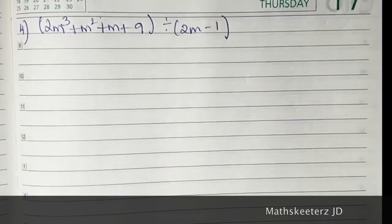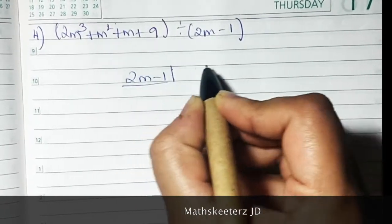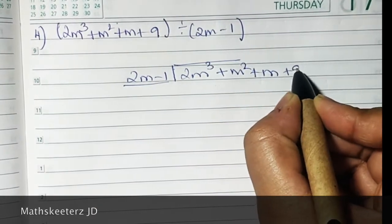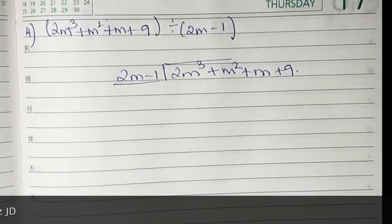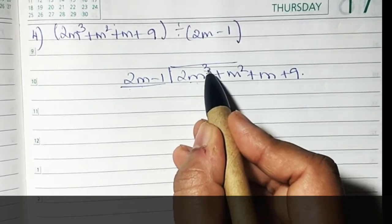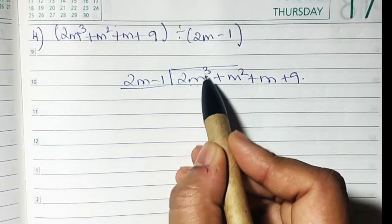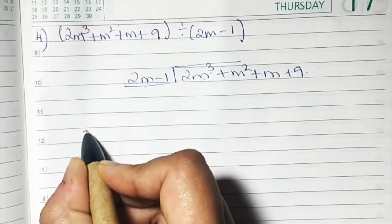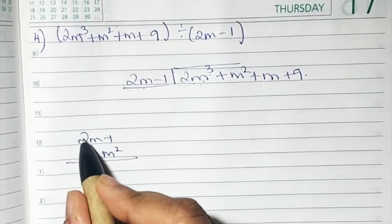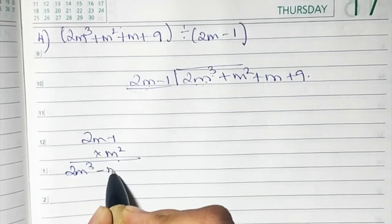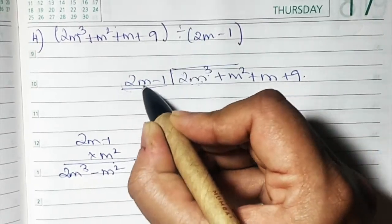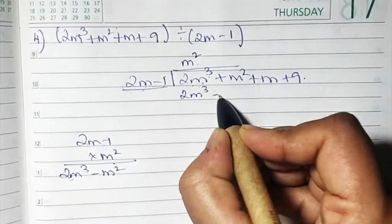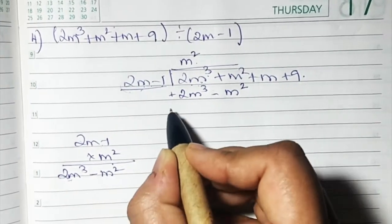Now sum number 4. We write it in the division pattern: 2m - 1 outside, and 2m³ + m² + m + 9 inside. The first term is 2m and we have 2m³, so 2 m's are missing — from 1m to 3m. We multiply 2m - 1 by m² to get the first term: 2m × m² = 2m³, and -1 × m² = -m².